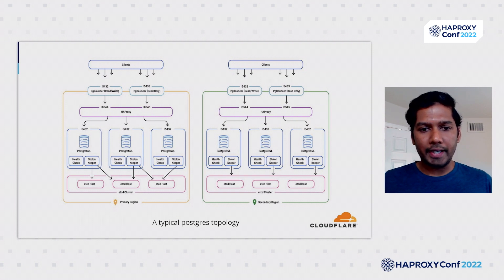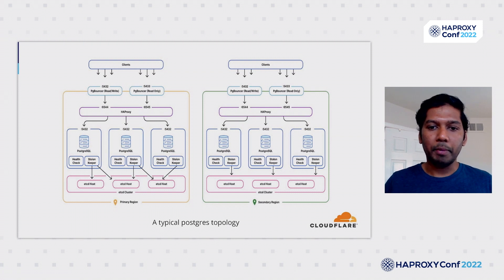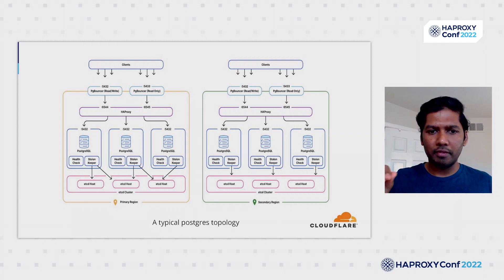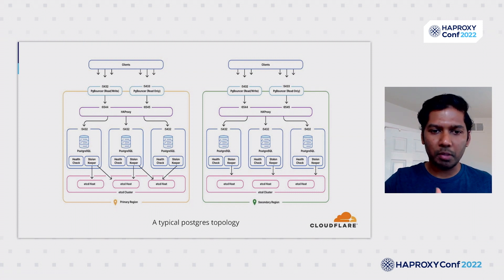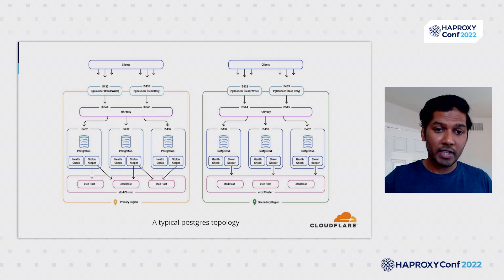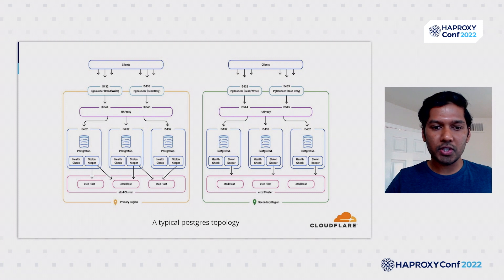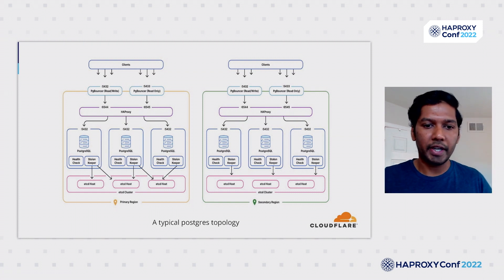Here we can see a picture of the typical setup of the Postgres ecosystem at Cloudflare. It starts with the clients, and we use PG Bouncer as our connection pooler. Then that's where HAProxy comes in for load balancing. All the clients connect to PG Bouncer and then get sent to HAProxy, which then load balances the traffic across the Postgres servers, as you can see from the diagram. There are other pieces like STOLON and ETCD, which we use for automating the high availability aspect.